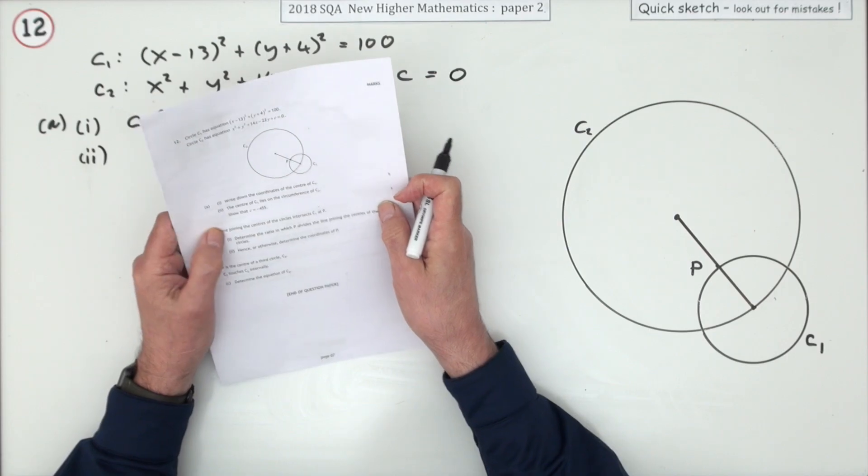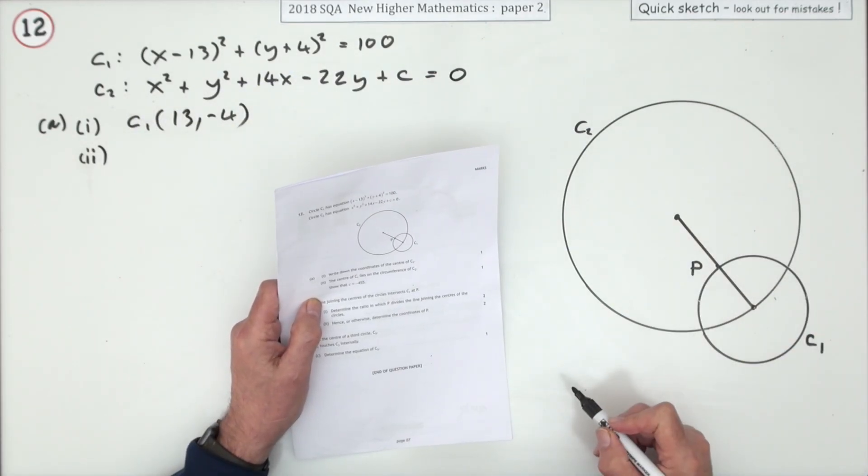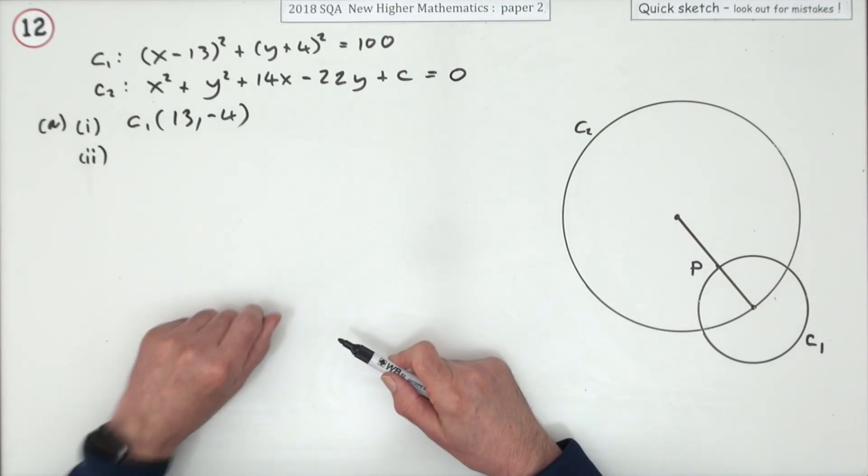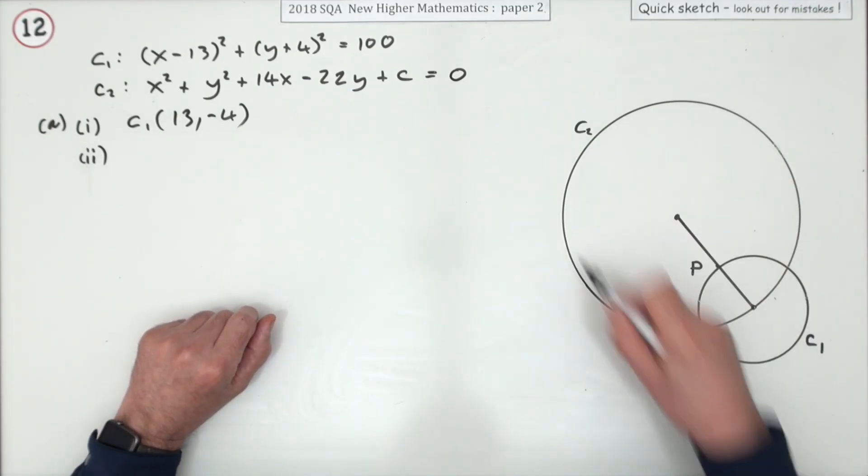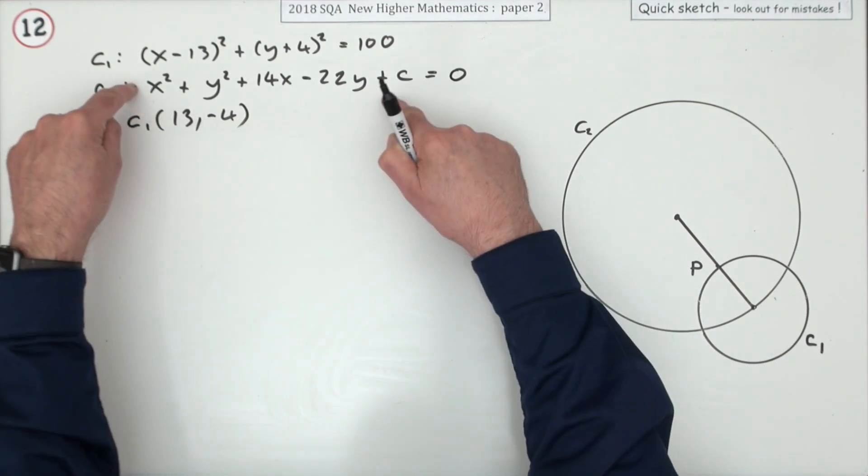The center of C1 lies on the circumference of C2, the larger circle. Show that c equals negative 455. Well, if that center lies in that circle, those coordinates fit that equation. Putting those into this equation should give the answer zero.